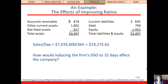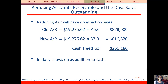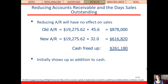First we've got to figure out how much they're selling per day, so we take sales and divide by the number of days in the year. If you take sales per day and multiply it by 45.6 — because that's how long it currently takes to collect — that matches their current accounts receivable of $878. But if you reduce DSO to 32 days, that reduces accounts receivable to $616, which frees up $261,000 in cash — meaning they're collecting on sales they've already made but aren't waiting to be paid for.